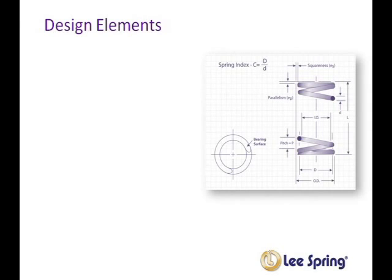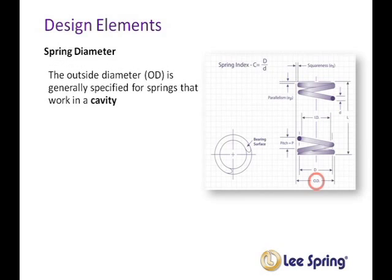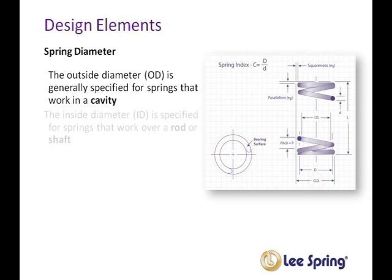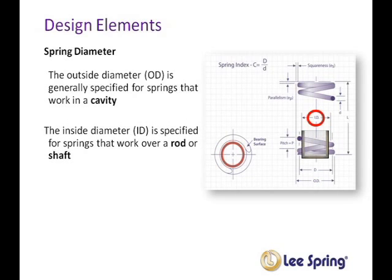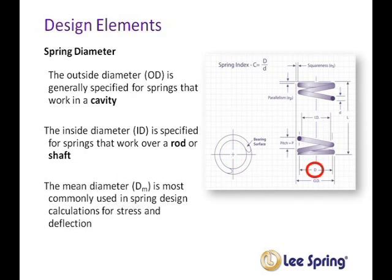Now let's look at the physical dimensions of the spring, specifically spring diameter. Spring diameter is often referenced in a couple of different ways. One method is the outside diameter, or OD — this dimension is important when the spring is used within a cavity. Another dimension is the inside diameter, or ID — this dimension is important for springs that work over a rod or shaft. The next type is the mean diameter, which is most often used for calculations for stress and deflection.